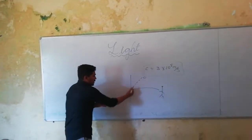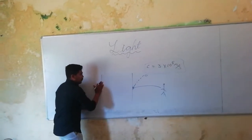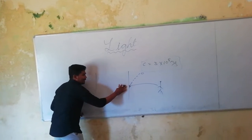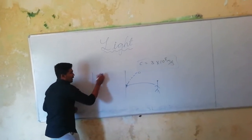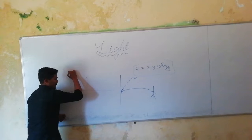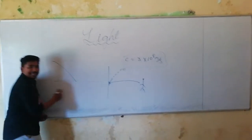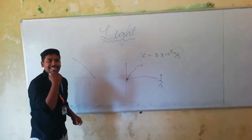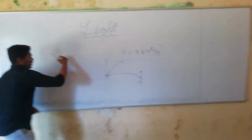Same thing we will discuss about this time. I take a mirror — one plane mirror. I send one light. That is called the incident ray. Incident ray.